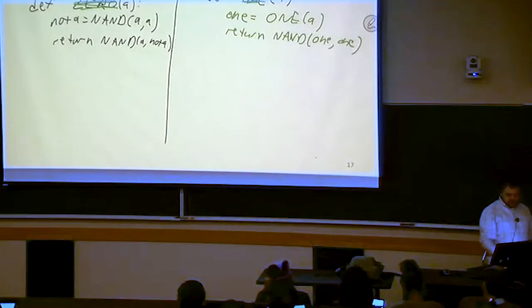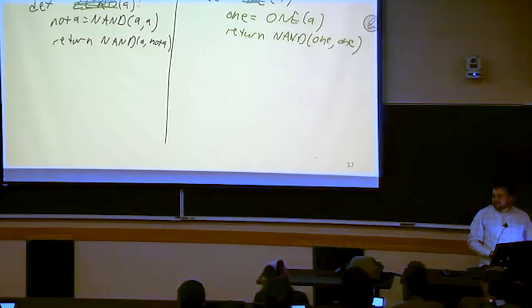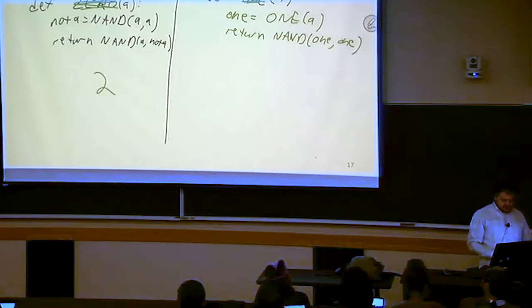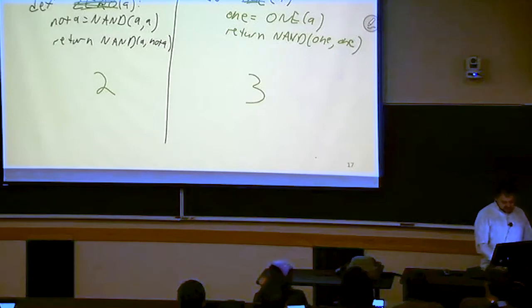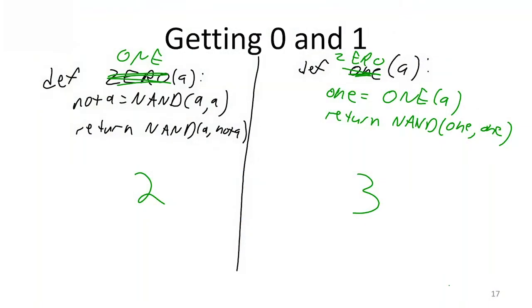How many gates did we use for 1, which is now on the left? 2. So we used 2 gates for 1. How many NAND gates did we use for 0? 3. So we can do our constants 1 and 0 using at most 3 gates.